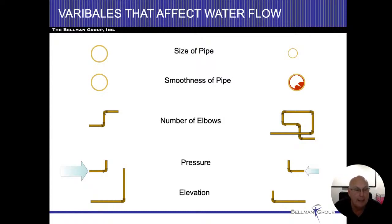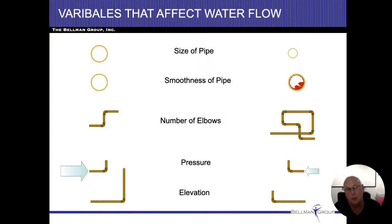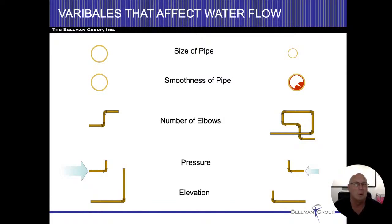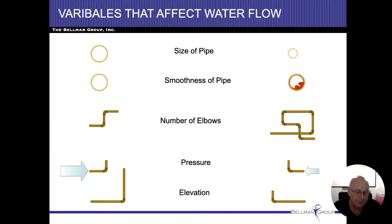When you start getting taller buildings like the Willis Tower or the John Hancock building, they actually have to have reservoirs where they catch water and then pump it up the next 20 or 50 stories. In residential buildings, we're typically going to be three stories tall at the most. On average, you lose five PSI per floor — the exact number is one pound for every 2.2 feet of elevation, which rounds to five PSI per floor.